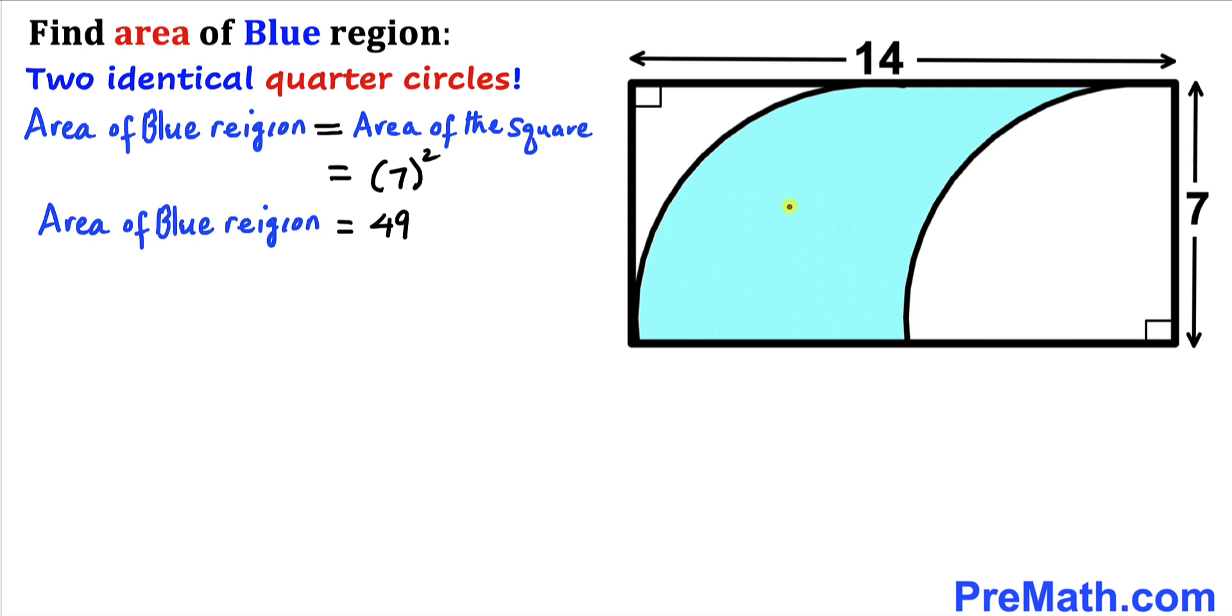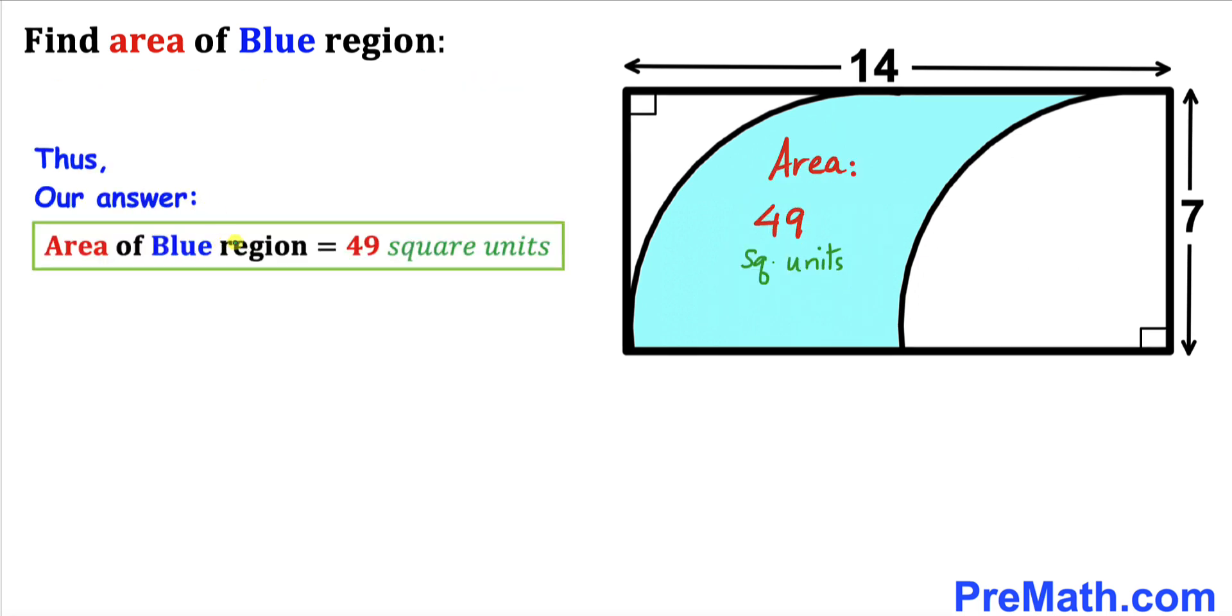So therefore we conclude that the area of this whole blue shaded region is going to be 49 square units. So thus the area of this blue shaded region turns out to be 49 square units, and that's our final answer.